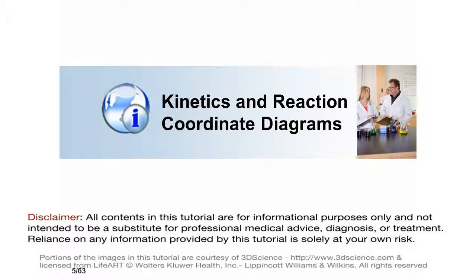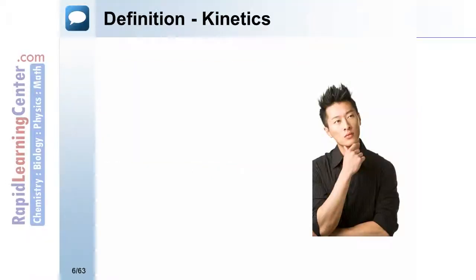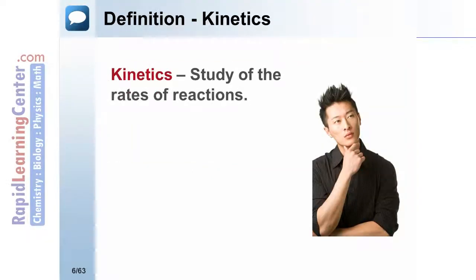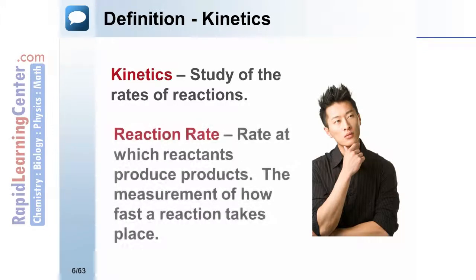Kinetics and Reaction Coordinate Diagrams. Kinetics is the study of rates of reactions, or how fast reactions proceed. Reaction rate is the rate at which reactants disappear and products form. It's how fast the reaction takes place.